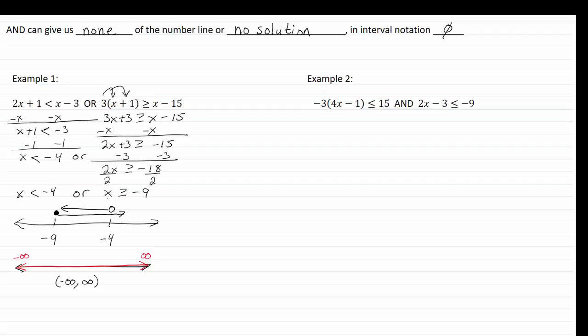Let's take a look at example two. We're going to start by distributing. We get negative twelve x plus three, less than or equal to fifteen. We'll subtract three from both sides. We get negative twelve x is less than or equal to twelve.